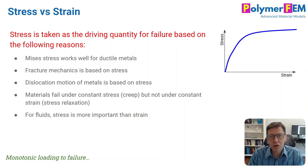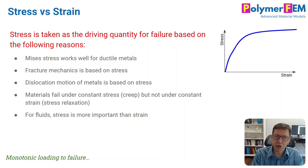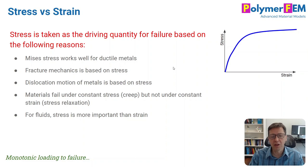The first thing you need to address is: under monotonic loading to failure, what quantity do you focus on? Do you say that failure occurs at a given strain or a given stress? Christensen makes the argument that it should be stress. His arguments are that stress works in fracture mechanics, it works for ductile metals, and it's based on dislocation motion and so forth. So he says it should be stress.